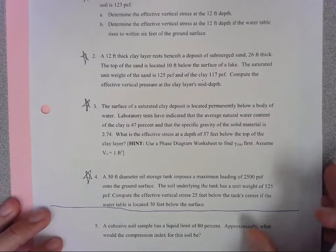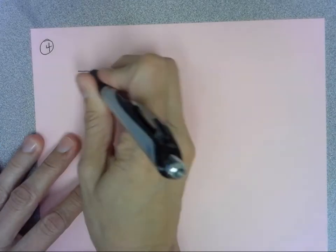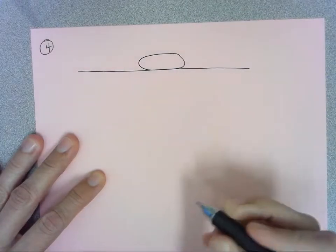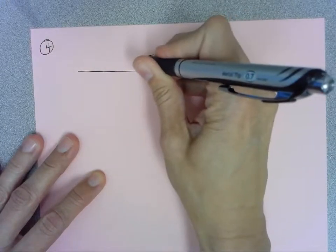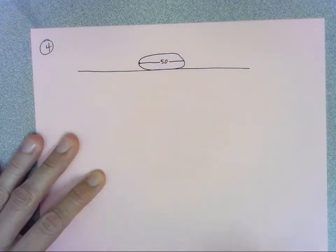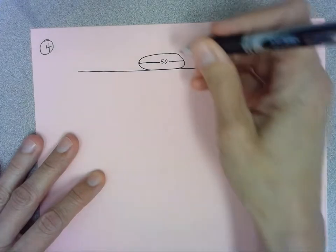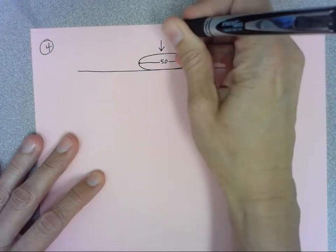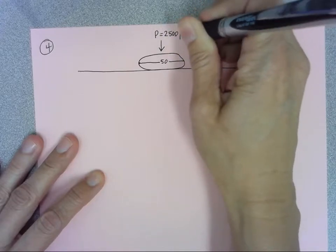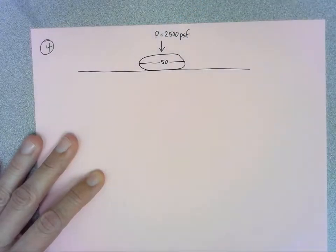So I'm going to go ahead and draw this out just so you can get a visual. Not required but can be helpful when you're thinking about what things look like. So here's our surface. We've got this circular storage tank up here with a 50-foot diameter. Remember that's from the edge to another edge through the center. It's going to give a load of, I'm going to put that at the top, a pressure of 2,500 pounds per square foot onto the ground surface.